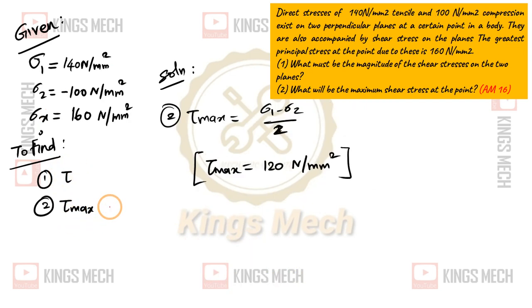For tau max, the formula is simple: sigma 1 minus sigma 2 divided by 2. So 140 minus minus 100 divided by 2 equals 240 by 2 equals 120 newton per mm square.